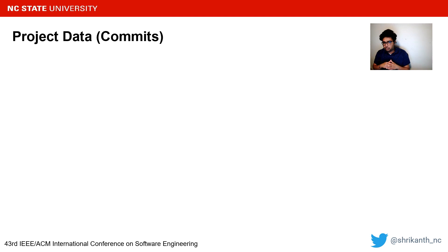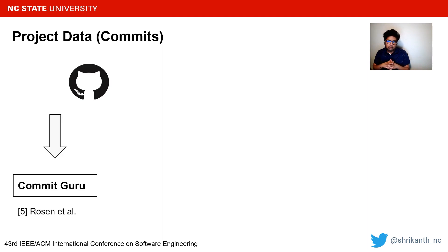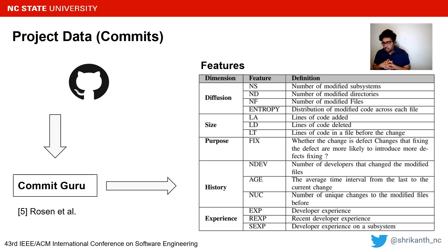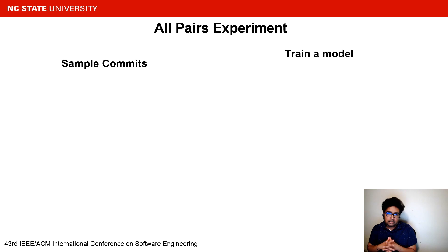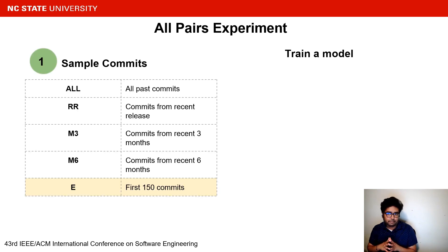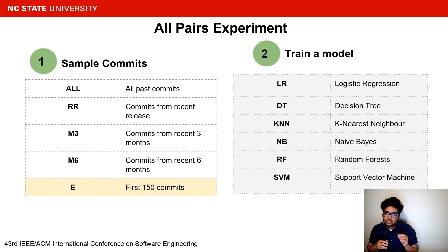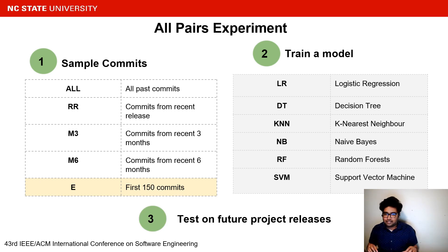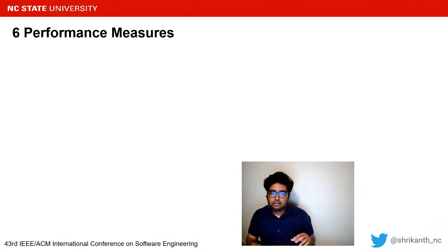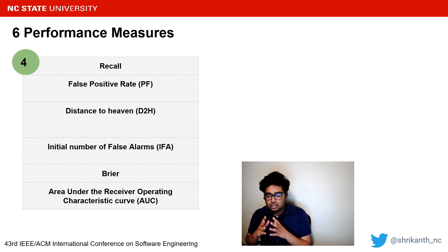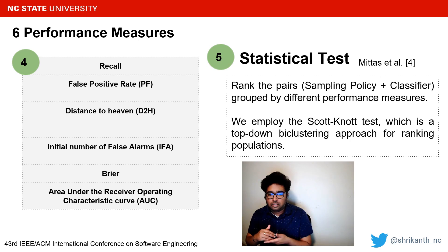All our data comes from open source GitHub projects. We used Commit Guru to mine the process metrics and defect information from these projects. Data from Commit Guru does not contain release information, which we extract separately from the project tags using GitHub APIs. To compare sampling policies, we run all-pairs experiments in five steps: each step builds a defect prediction model using one of six classifiers with data sampled from one of the five policies, tests it on all future releases, and analyzes the score distributions statistically using the Scott-Knott test.